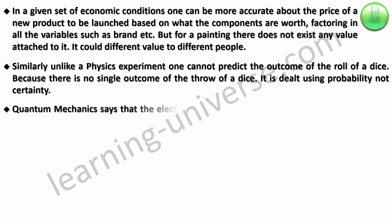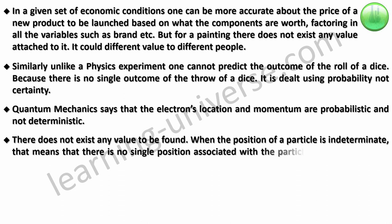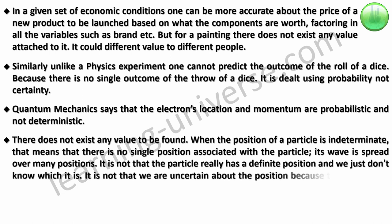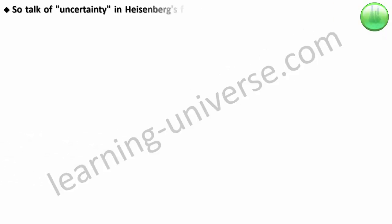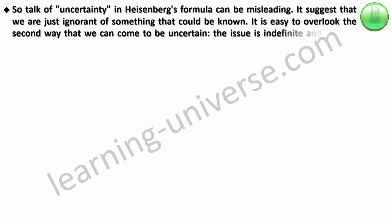Quantum mechanics says that the electron's location and momentum are probabilistic and not deterministic. There does not exist any value to be found. When the position of a particle is indeterminate, that means there is no single position associated with the particle. Its wave is spread over many positions. It is not that the particle really has a definite position and we just don't know which it is. It is not that we are uncertain about the position because there are more facts to be known. In fact, there are no further facts to know. So talk of uncertainty in Heisenberg's formula can be highly misleading. It suggests that we are just ignorant of something that could be known. The issue is indefinite and there is nothing more to know.